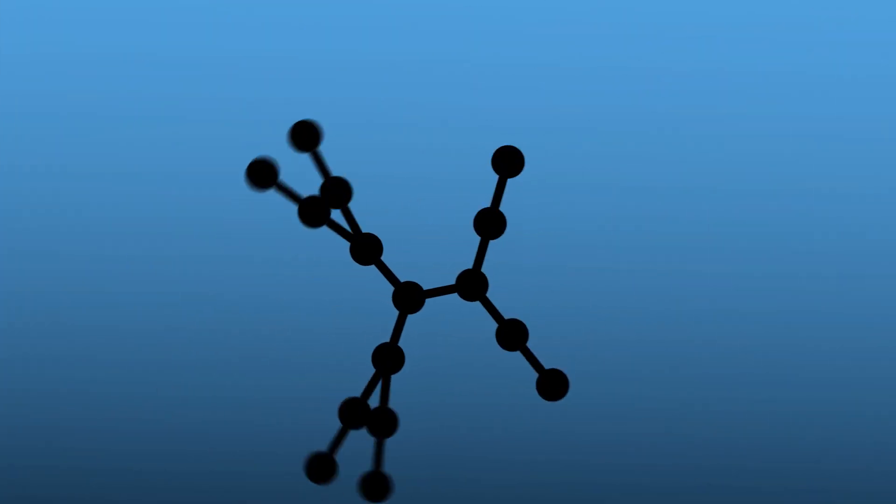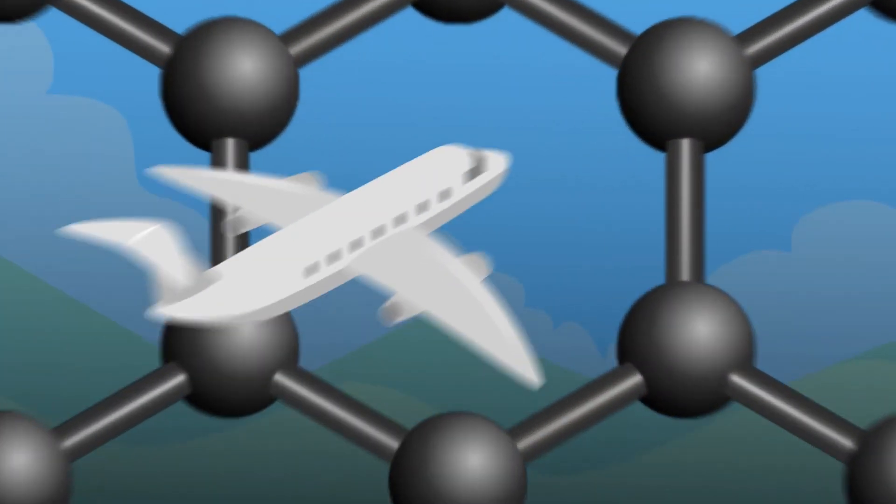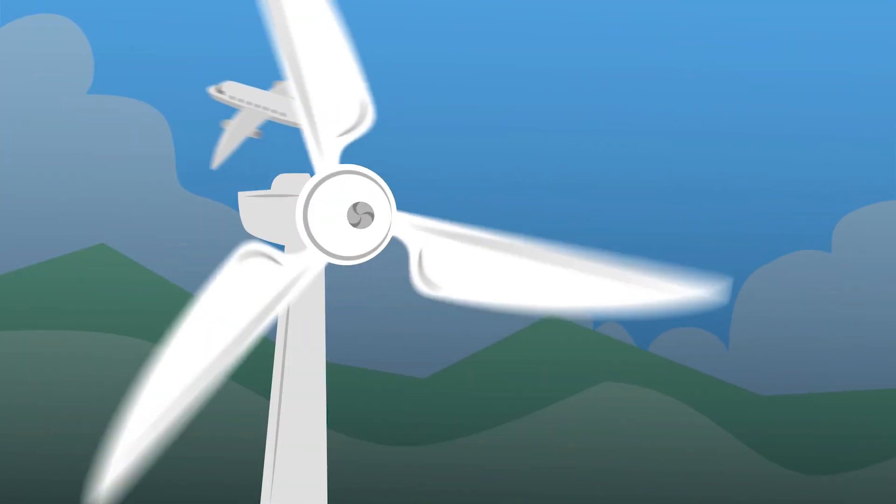The project used graphene to create new sensors for monitoring the structural health of composite materials such as those used in airplanes and wind turbines.